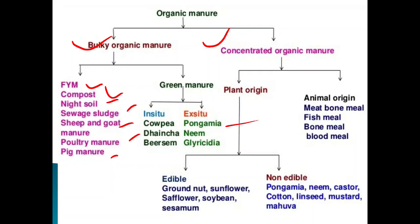Night soil is a compost or manure which is prepared from human excreta. Sewage: the liquid portion of municipal waste is called sewage, and the solid portion of municipal waste is called sludge. Other examples of bulky organic manures include sea pan, goat manure, poultry manure, and pig manure.